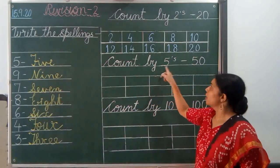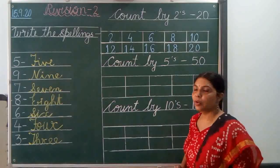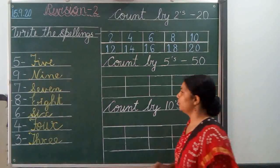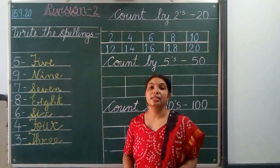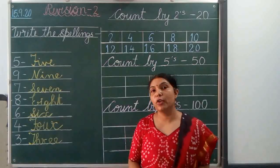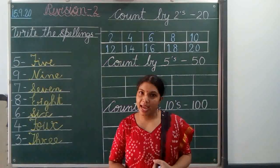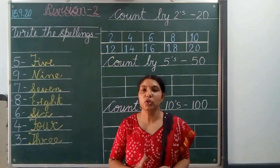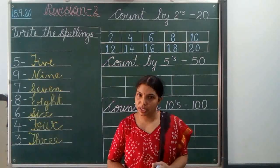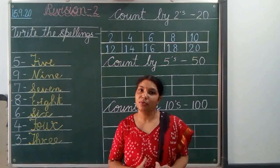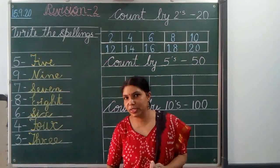Next is count by 5's 50. Count by 5's 50. Let's start. What is count by 5's 50? What do you have to write down? 5, 10, 15, 20, 25, 30, 35, 40, 45 and 50.